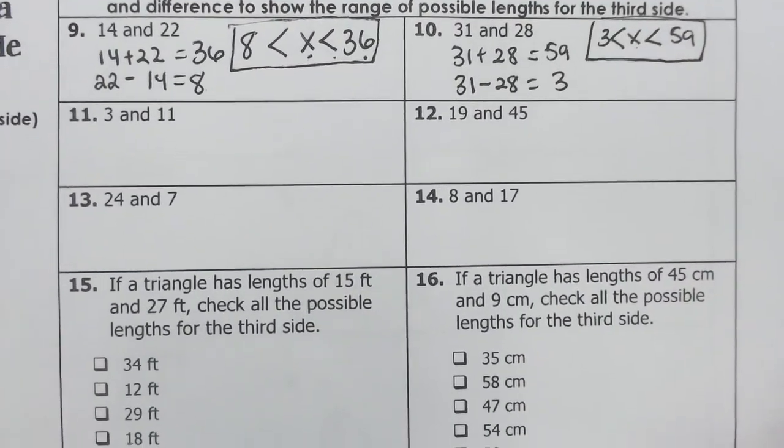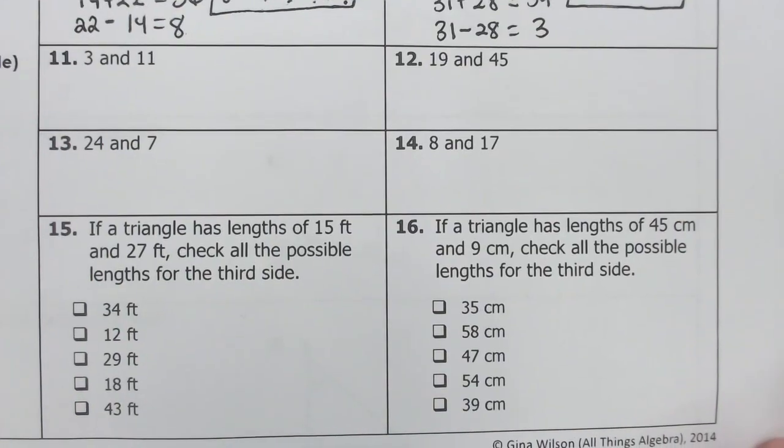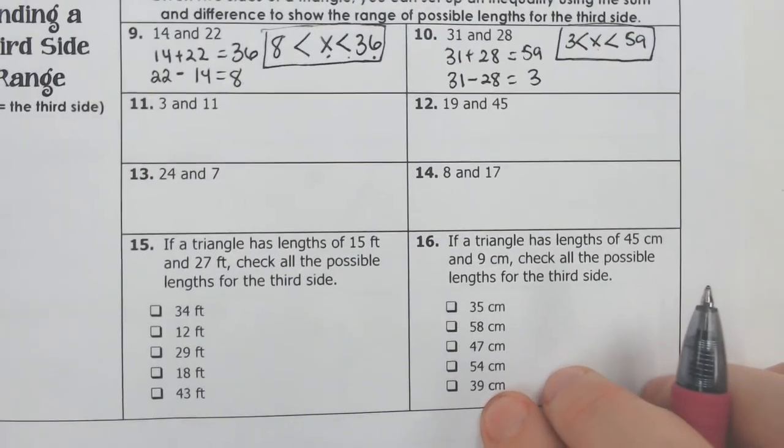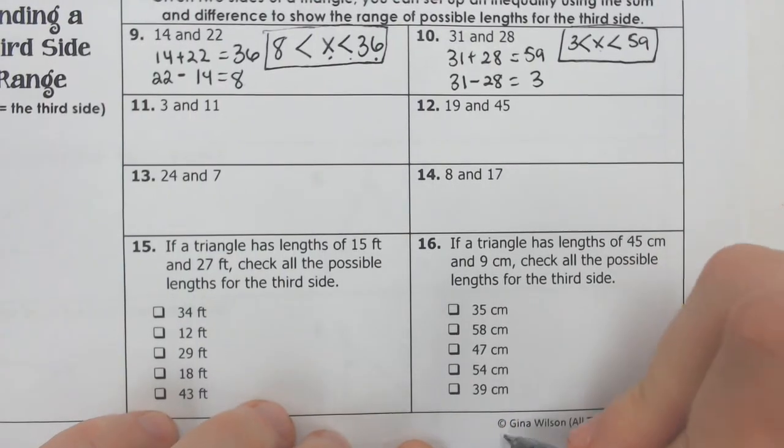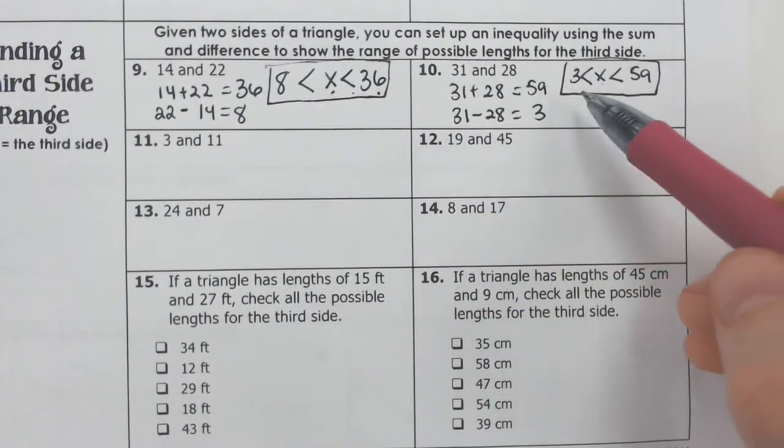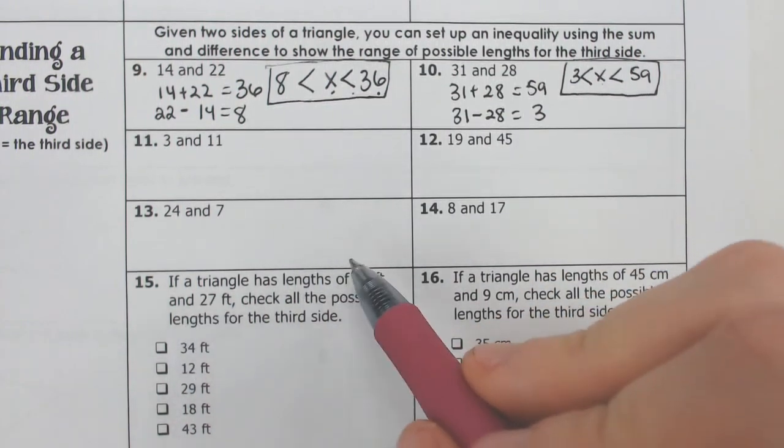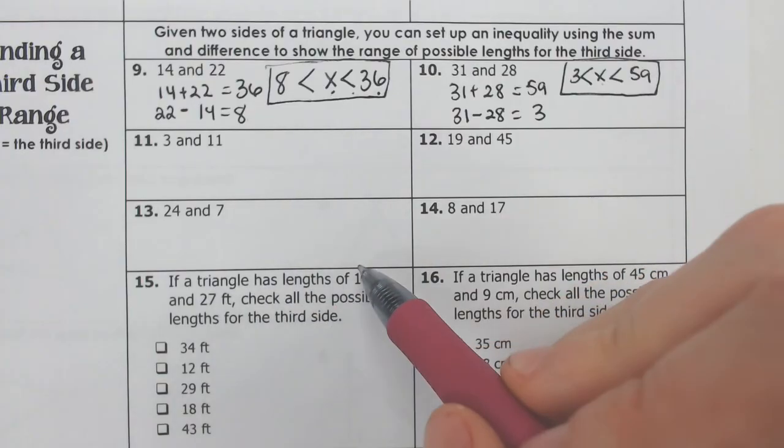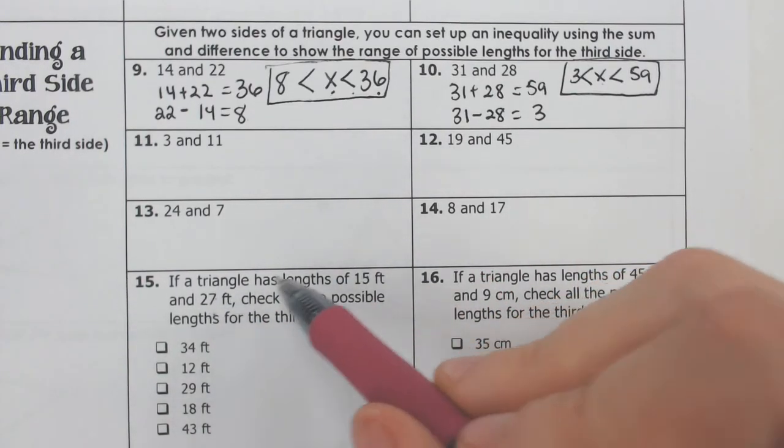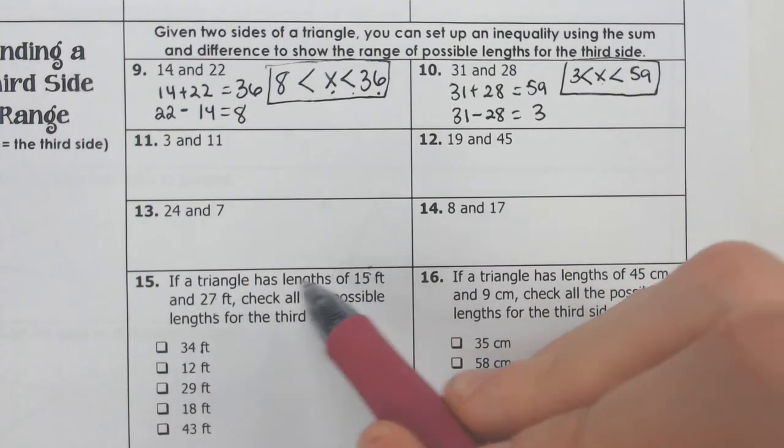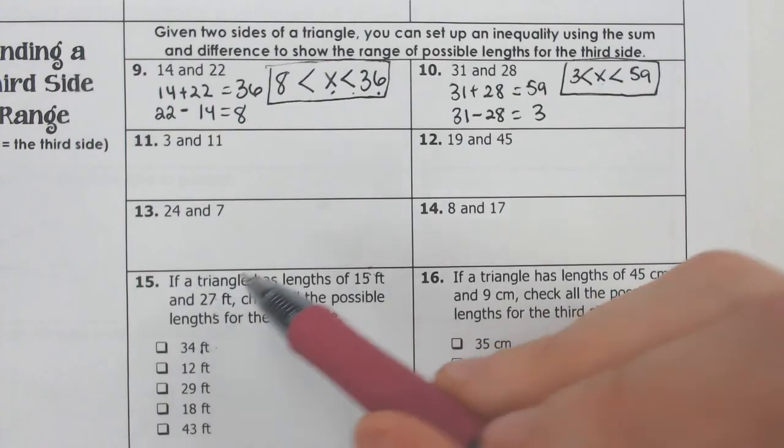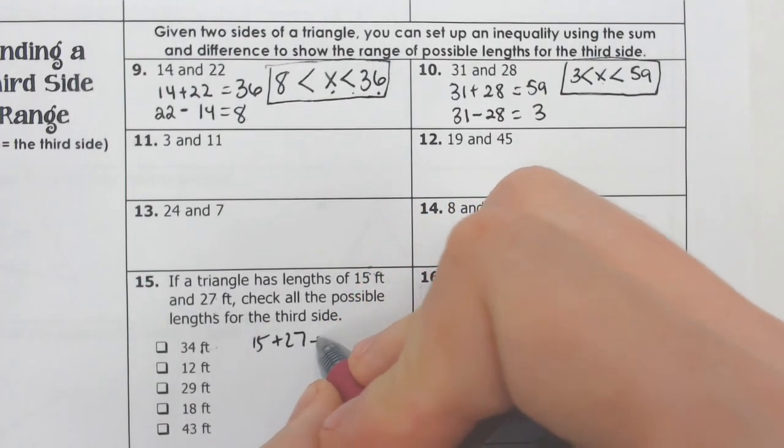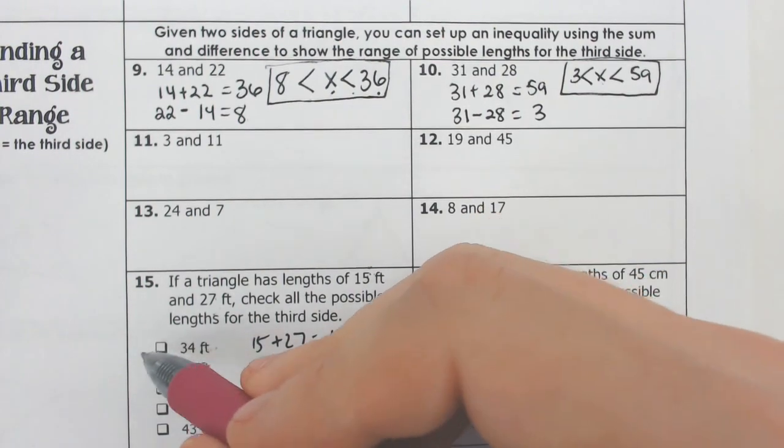Now, another way that some multiple choice would do it is if the triangle has lengths of 15 and 27, check all the possible lengths for the third side. So there's a few different ways you could do this. You could figure out just exactly what is the little inequality, but you could also figure out just by looking at the numbers, adding and subtracting them, if this is a possible thing. So if we have 15 and 27, could I add those together and would it be more than 34? Because if the 34 was given to me, that would be the longest side. 15 plus 27, is that going to be more than 34? Yeah, it's going to be a lot more than 34. If we add 15 and 27 together, we end up with, what is that, 42? And 42 is way more than 34.